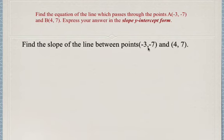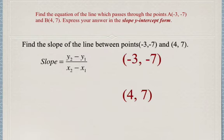...of the line between these two points negative 3, negative 7 and 4, 7 is to use the slope formula: y2 minus y1 over x2 minus x1. It's always important you realize that if you're given two points, you can automatically calculate the slope.